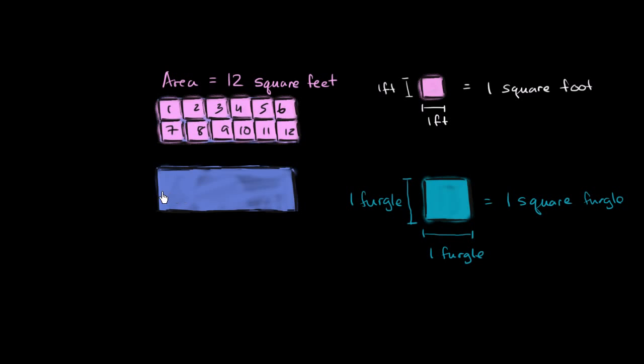So let's see how many square fergals is this area, that same area that is 12 square feet. So let's see, we can get one square fergal on there. We can get another square fergal on there. And we can get a third square fergal on there. So we get one, two, three square fergals.